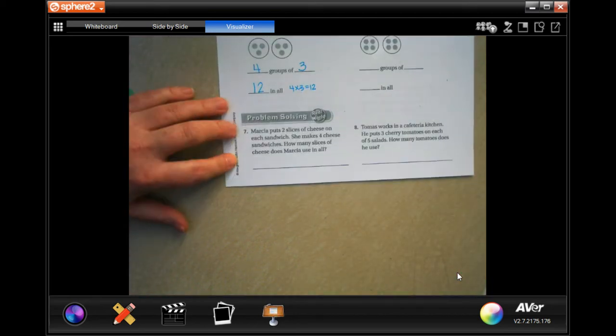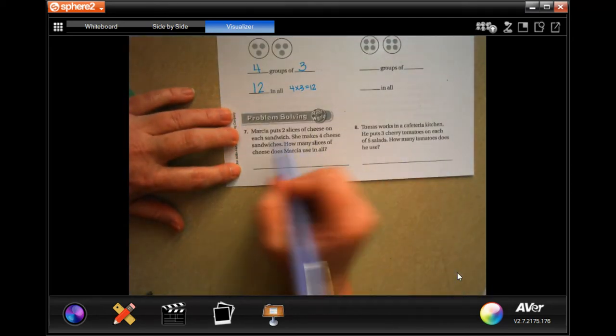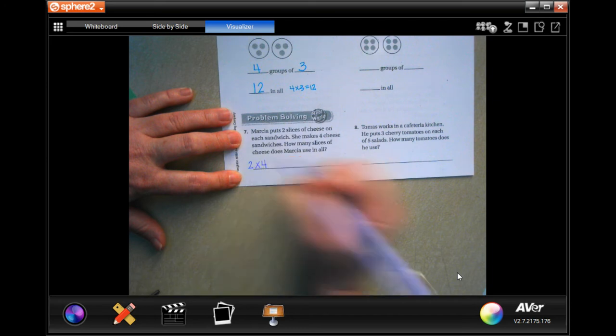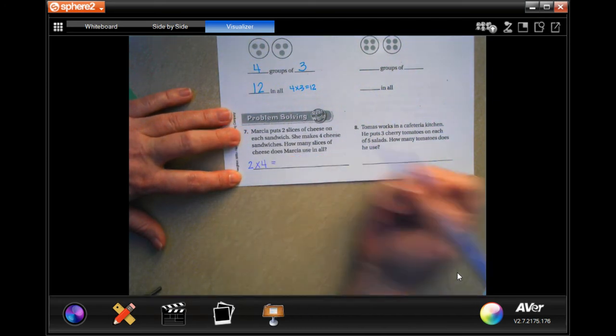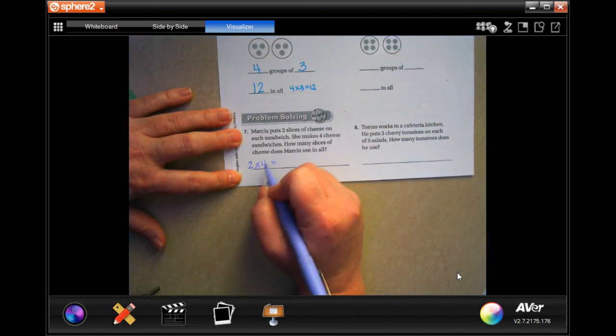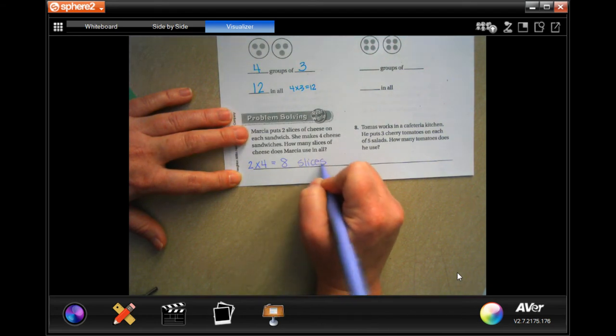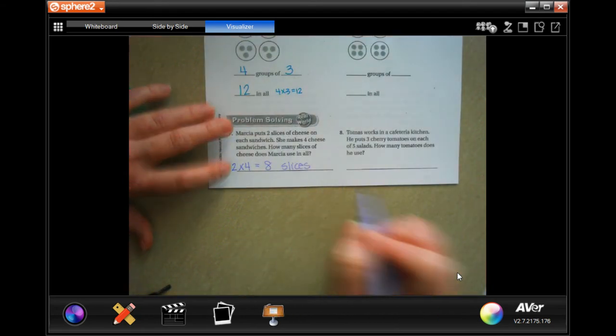Okay, we're going to go down and do number seven. Marsha puts two slices of cheese on each sandwich. She makes four cheese sandwiches. So two slices by four sandwiches. How many slices of cheese does she use? Well, two times four is eight. Word problem, word answer, eight slices.